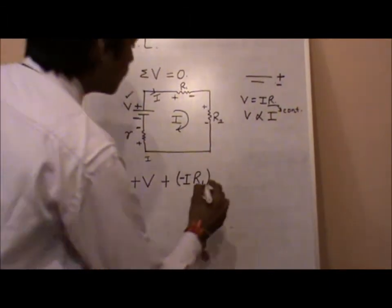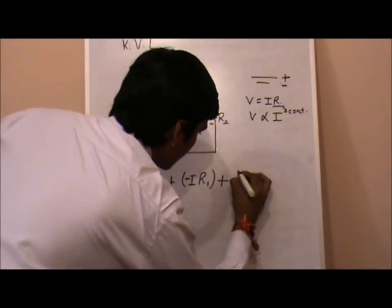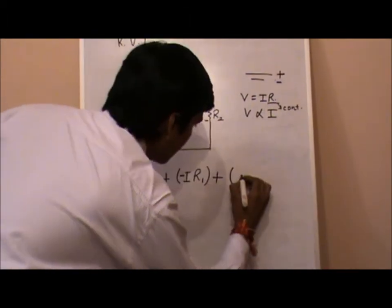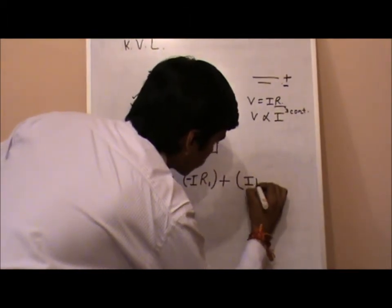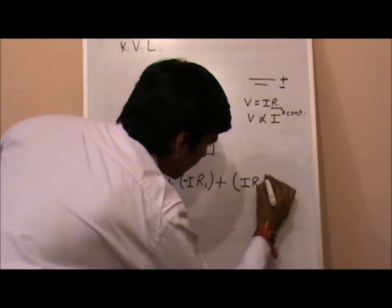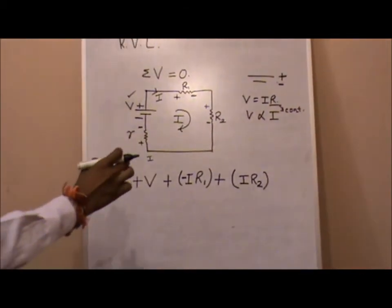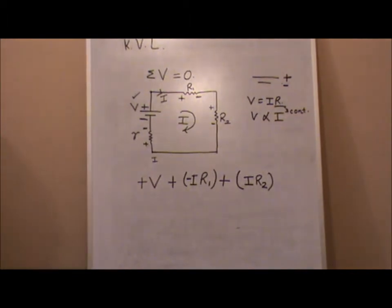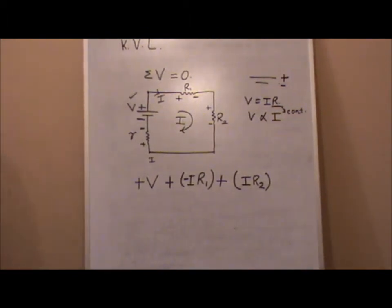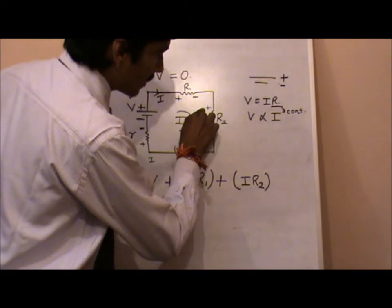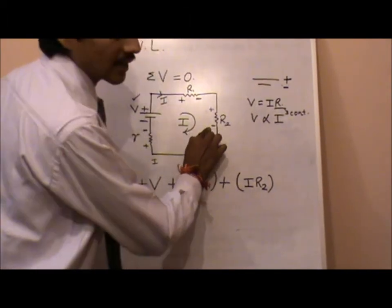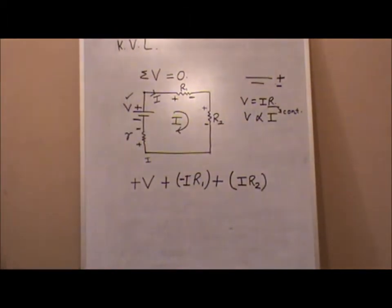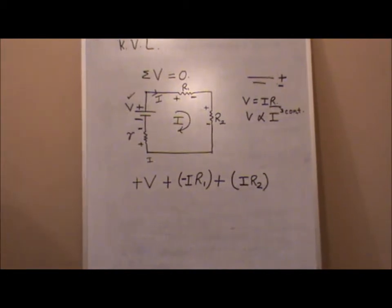Coming to R2, plus into the bracket I multiplied by R2, that means it becomes a potential drop. Yes, why am I saying this is a potential drop? Because entering with a positive sign, leaving with a negative sign, that means a value with a negative sign is a drop.